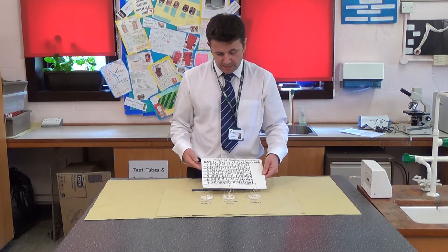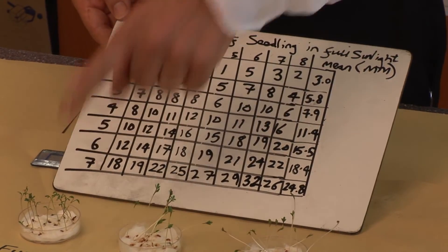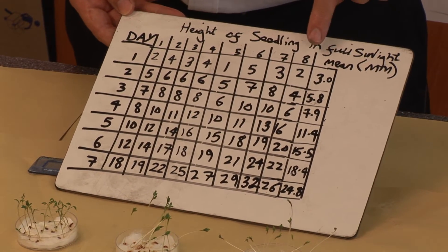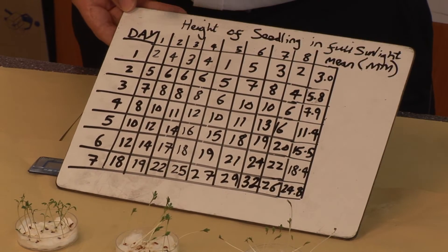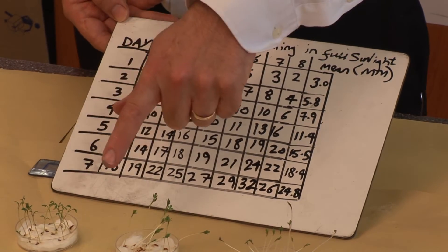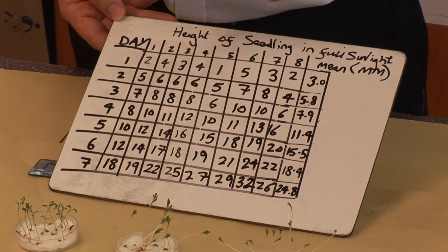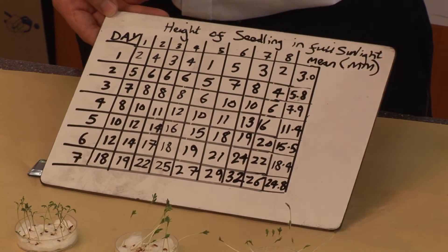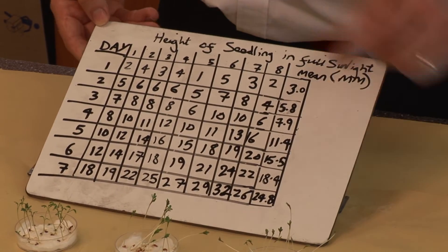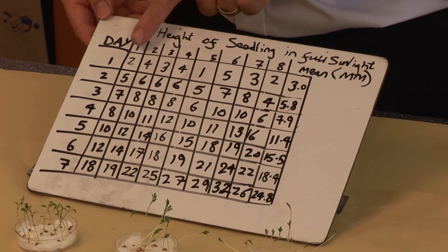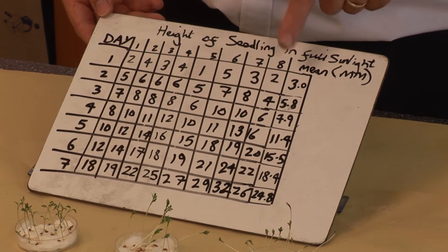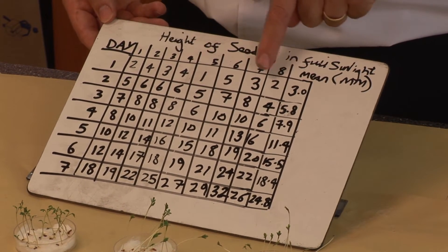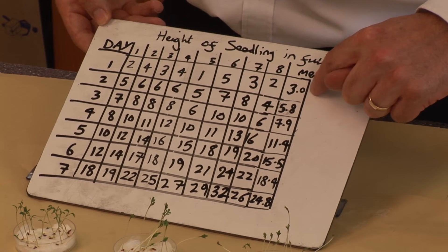Here are some results — these are the heights of the seedlings in full sunlight. I have seven days recorded and eight seedlings measured. You measure each seedling individually in millimetres and then find a mean value. To work out the mean, add up all of the heights for that particular day and divide by the number of cress seeds — in this case eight. I added them all up, divided by eight, and got 3.0 as the mean for day one.